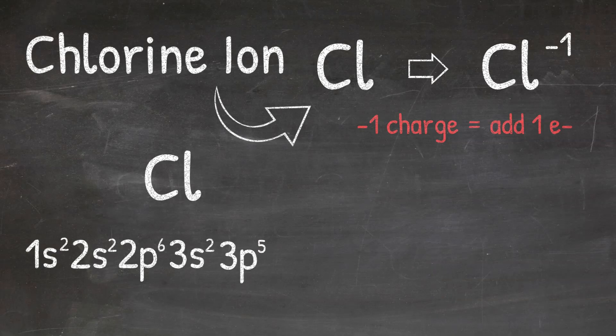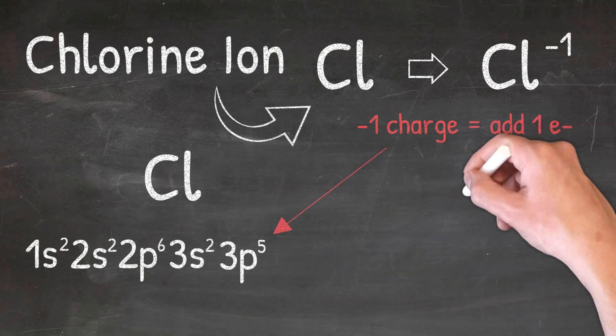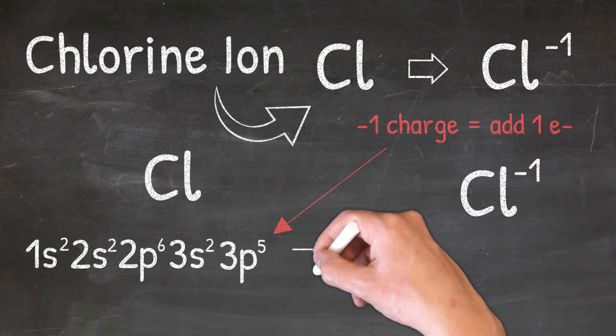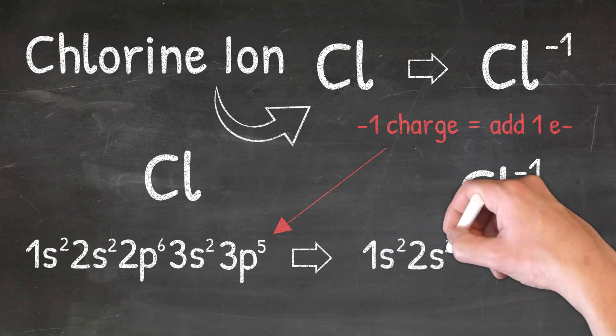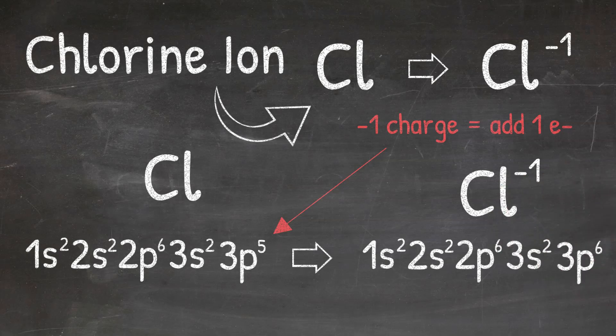I'm going to add the electron to the outermost energy level where I have available space. The outermost or highest energy level is the third energy level, as shown by 3s2 and 3p5. I cannot add it to the s orbital because the s orbital can only hold two electrons. The p orbital can hold six electrons, so 3p5 has space for an extra electron, which is where I'm going to add it. That's going to leave me with an electron configuration of 1s2, 2s2, 2p6, 3s2, 3p6, which is the electron configuration for the chlorine ion.